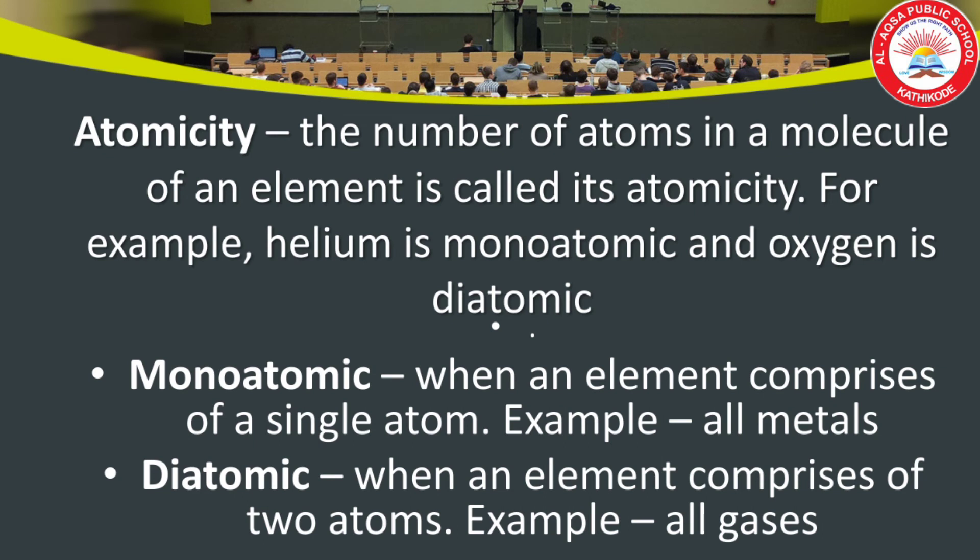Next is atomicity. The number of atoms in a molecule of an element is called its atomicity. For example, helium is monoatomic — helium molecules consist of only one atom. Oxygen is diatomic because one molecule of oxygen consists of two atoms.